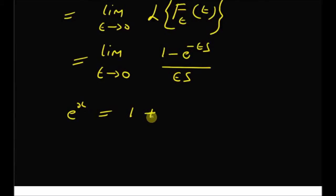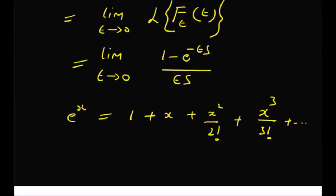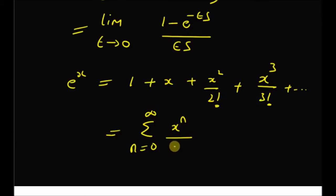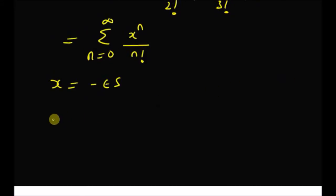Now by using the Taylor series expansion of the exponential function, e to the power x equals 1 plus x plus x squared over 2 factorial plus x cubed over 3 factorial and so on — that is, an infinite series which can be written as summation n equal to 0 to infinity of x to the power n divided by n factorial. We use x equal to minus epsilon times s.